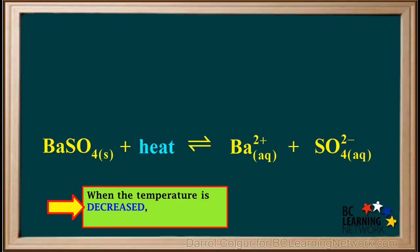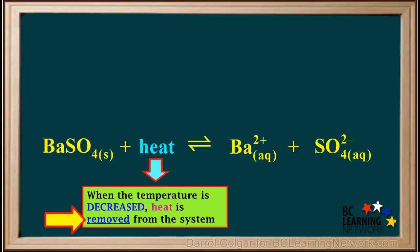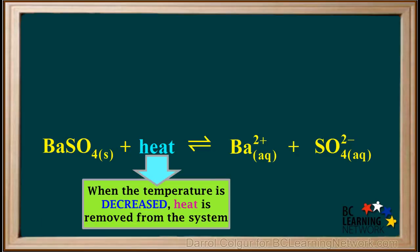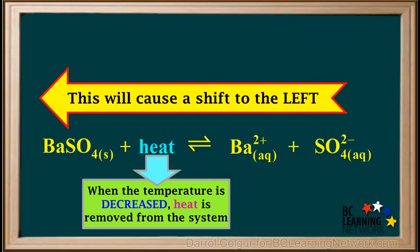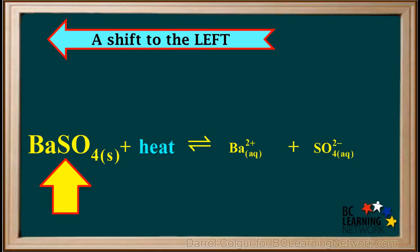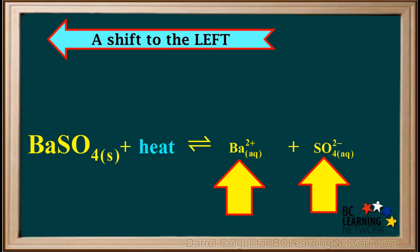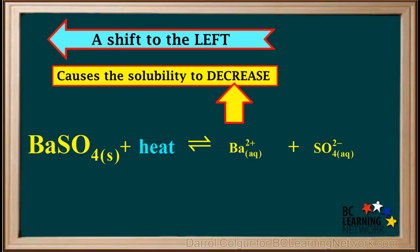It should be easy to see now that if we were to decrease the temperature of this endothermic system, it would mean that we are removing heat from the system. In order to compensate for the loss of heat, Le Chatelier's principle would predict that the equilibrium would shift to the left in order to produce more heat. A shift to the left would increase the mass of the undissolved solid and decrease the concentrations of the dissolved ions. In other words, a shift to the left causes the solubility to decrease.